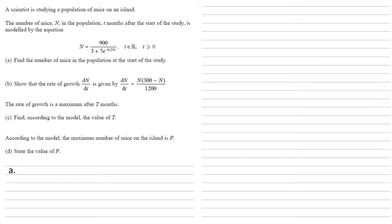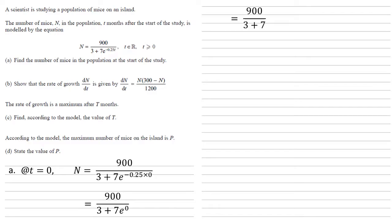At the start of the study, t is equal to 0. Putting this into our equation gives us n equals 900 over 3 plus 7e to the minus 0.25 times 0. The power of e is 0, and e to the 0 is 1, which gives us 900 over 3 plus 7, that's 900 over 10. So the answer to part A is 90.